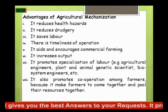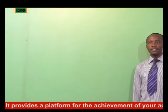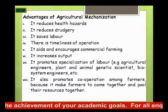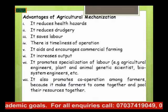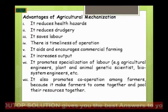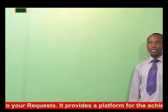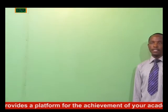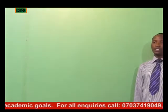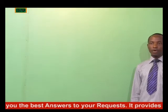The fifth advantage is that it aids and encourages commercial farming — allowing production at a large scale. The sixth advantage is that it increases output. The seventh is that it promotes specialization of labor, including agricultural engineers, plant and animal genetic scientists, and biosystems engineers. The eighth advantage is that it promotes cooperation among farmers, as they come together and pool their resources to procure the needed machinery, which they could not afford individually.